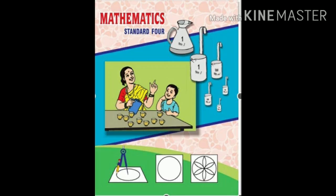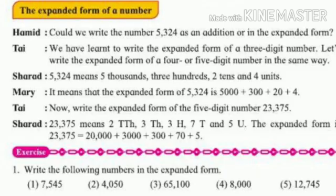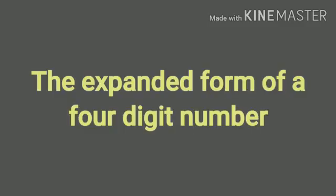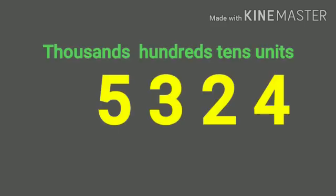Children, in the previous section we learned 4 and 5 digit numbers. Today we are going to learn the expanded form of a number. In the last standard — means third standard — we learned to write the expanded form of a 3-digit number. Today we are going to write the expanded form of 4 or 5 digit numbers in the same way.